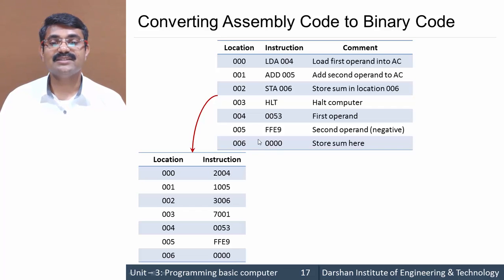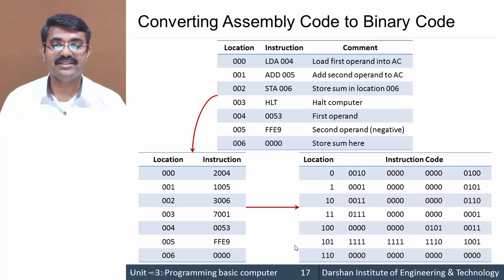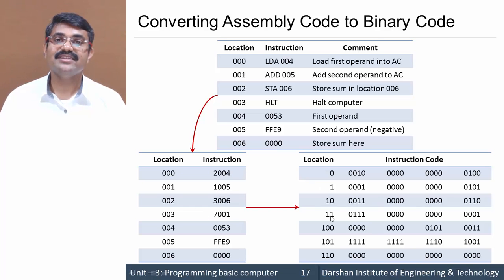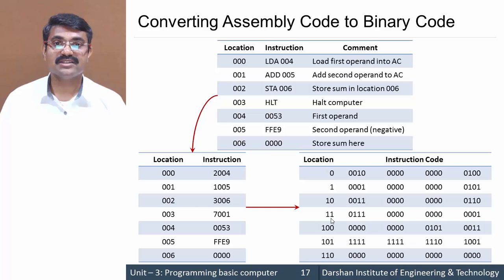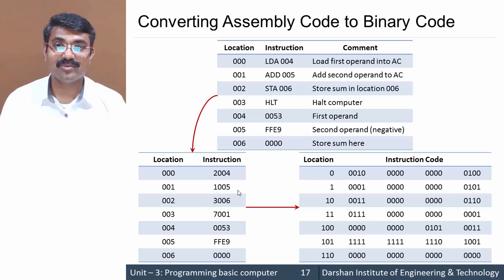We have converted the assembly code to hex code, and now it is straightforward to convert hex to binary. For example, 2004 in binary is 0010 0000 0000 0100. All instruction codes are translated to their corresponding binary — this is the actual task of the assembler. In our next session we will discuss how this translation operation is carried out by the assembler program.